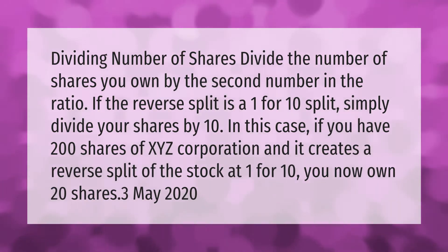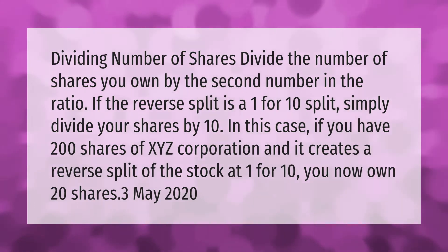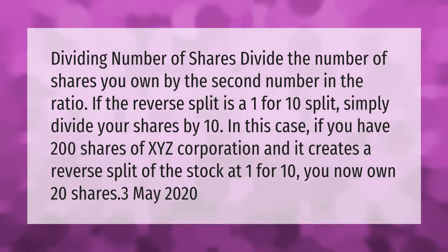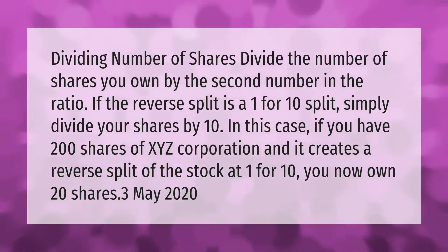Dividing the number of shares: divide the number of shares you own by the second number in the ratio. If the reverse split is a 1-for-10 split, simply divide your shares by 10. In this case, if you have 200 shares of XYZ Corporation and it creates a reverse split of the stock at 1-for-10, you now own 20 shares.